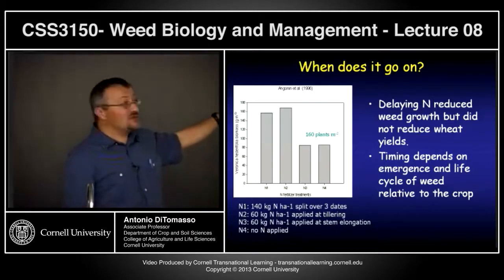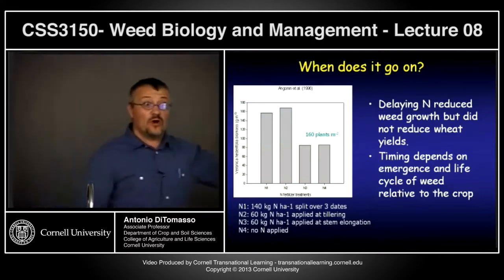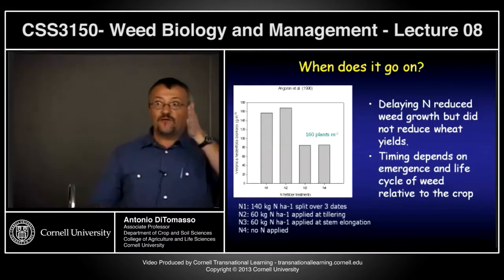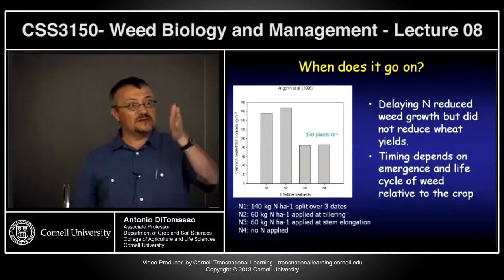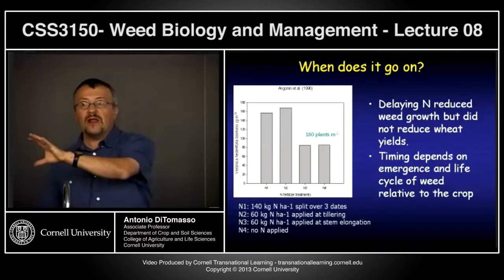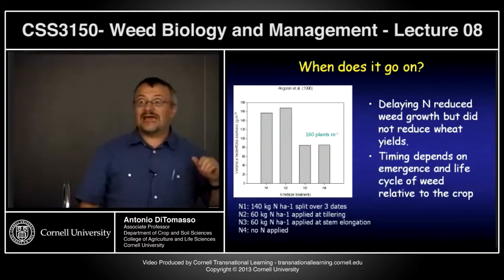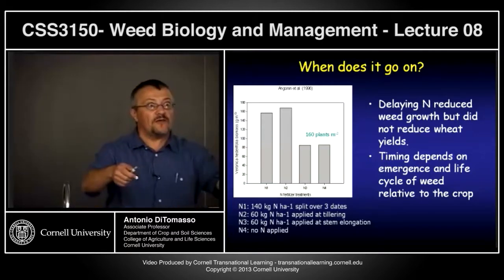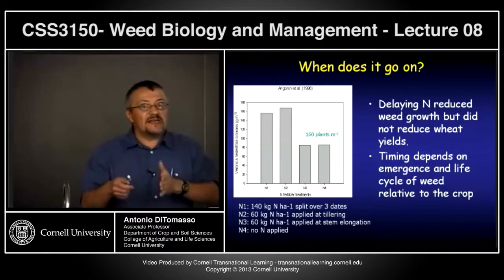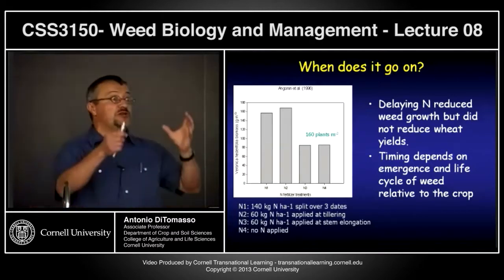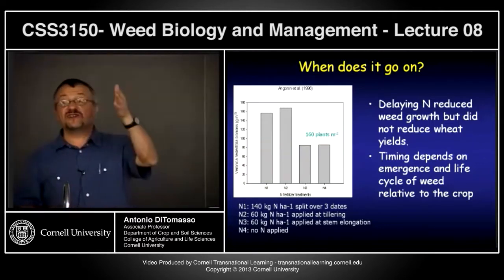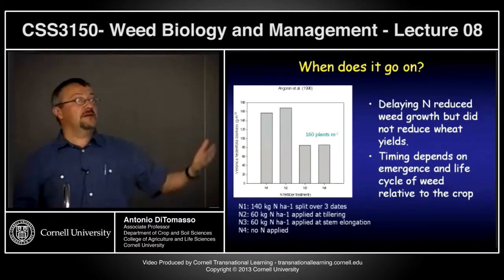I'll give you one where we saw the opposite: with Powell amaranth, if we split applications over the season — half at the beginning, then mid-season — that's when the crop did the best. If we applied it as one-shot nitrate at the beginning, the weeds did a lot better. Splitting it up gives a chance to the crop; it doesn't give this major boost to the weeds but allows the crop to capture some of the nitrogen.